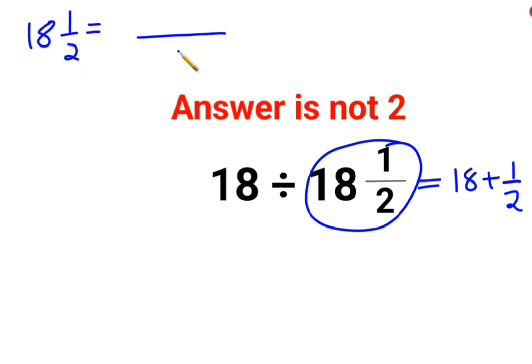See, here also the denominator continues to remain same. The next thing what you do is you multiply the integer with the denominator and add the numerator to get your final numerator. That is 37 by 2.